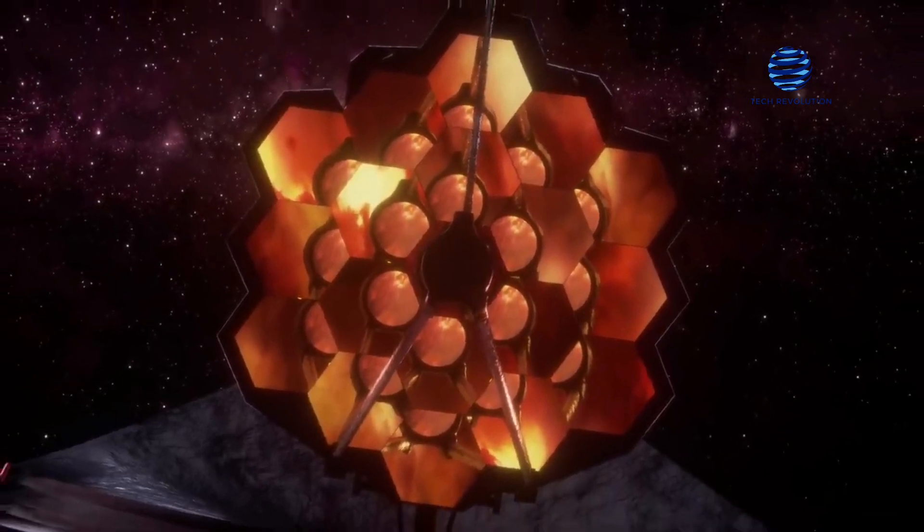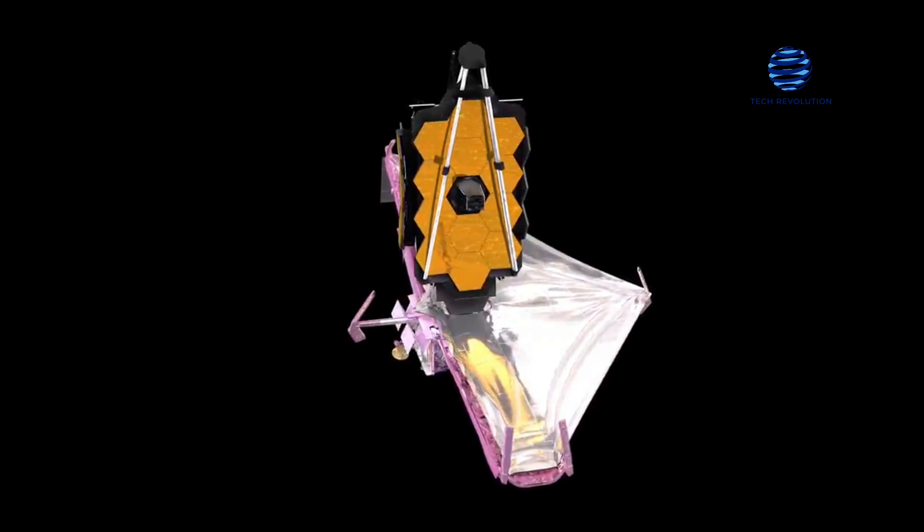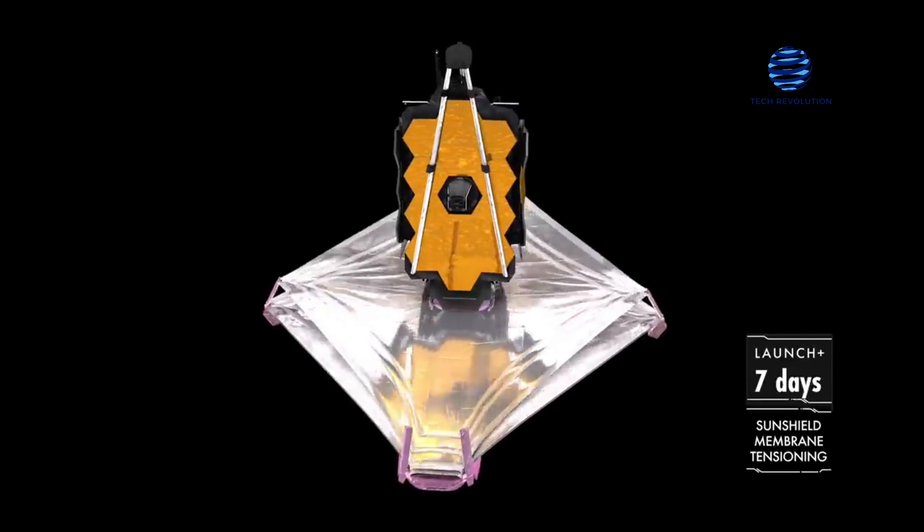Six months have passed since the James Webb Space Telescope was sent into orbit by a European rocket. Since then, the extremely complex telescope has successfully opened up its large sun shield, turned on its scientific equipment, and traveled more than a million kilometers away from Earth.